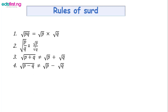The second rule: if p is dividing q and they share the same root, it is allowed to give each one its own root and then divide — root p divided by root q. The third rule: when you have root of (p + q), it is NOT allowed to separate them into root p plus root q. The fourth rule: root of (p − q) cannot be written as root p minus root q — that is not allowed.